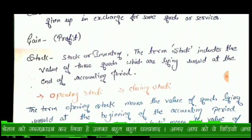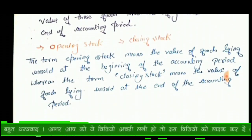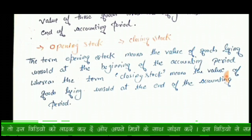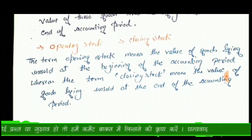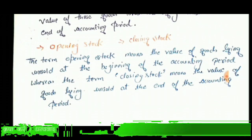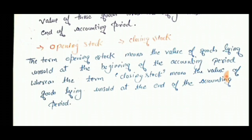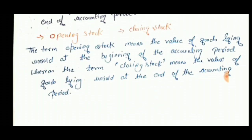There are two types of stock: opening stock and closing stock. Opening stock means the value of goods lying unsold at the beginning of the accounting period, while closing stock means the value of goods lying unsold at the end of the accounting period. For example, in the financial year from 1st April to 31st March — if by 31st March 2020, 30 out of 50 LEDs have been sold and 20 remain, those 20 LEDs become the opening stock for 1st April 2020. The goods remaining at the end of the year make up your closing stock.